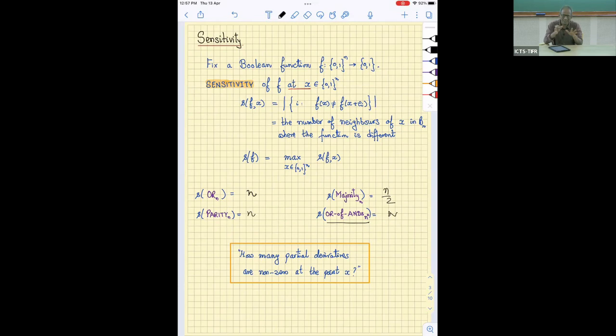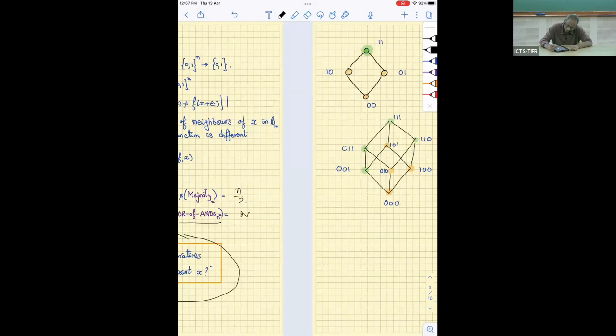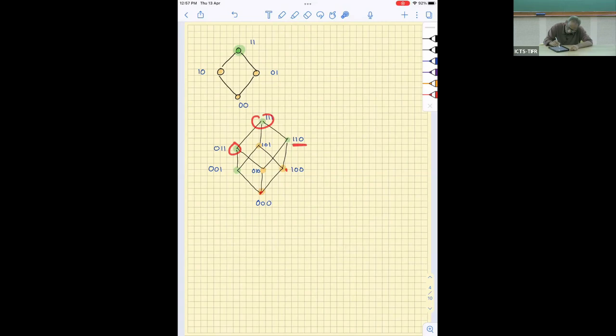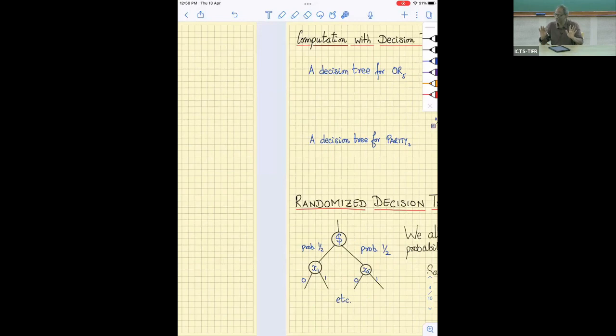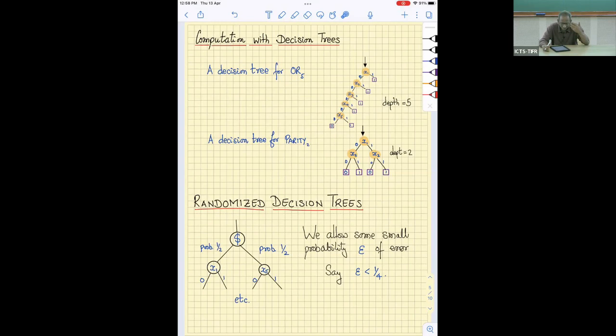I hope the notion of sensitivity is clear. And it is something like how many directional derivatives are non-zero. If you can imagine a Boolean function as a labeling of the Boolean cube, these are all possible inputs, and I have labeled these points green or orange, depending on whether the function takes the value 1 or 0. Another way of viewing sensitivity is: you look at a point and ask, how many of the neighbors have a different value? That is what sensitivity is.